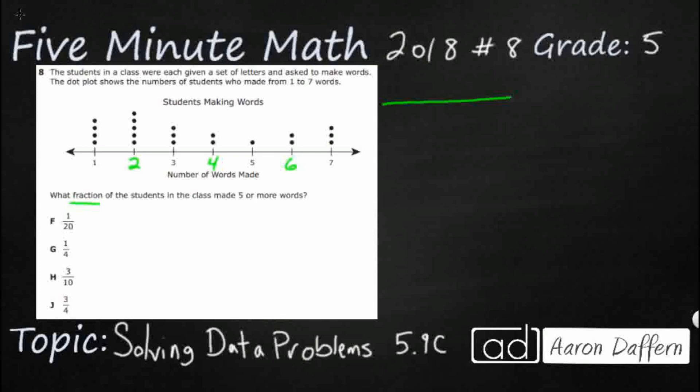So we need a fraction of the students in the class made 5 or more words. Since that's what we're looking for, that's going to be our numerator: students that are greater than or equal to, because that's what 5 or more means, greater than or equal to 5 words.